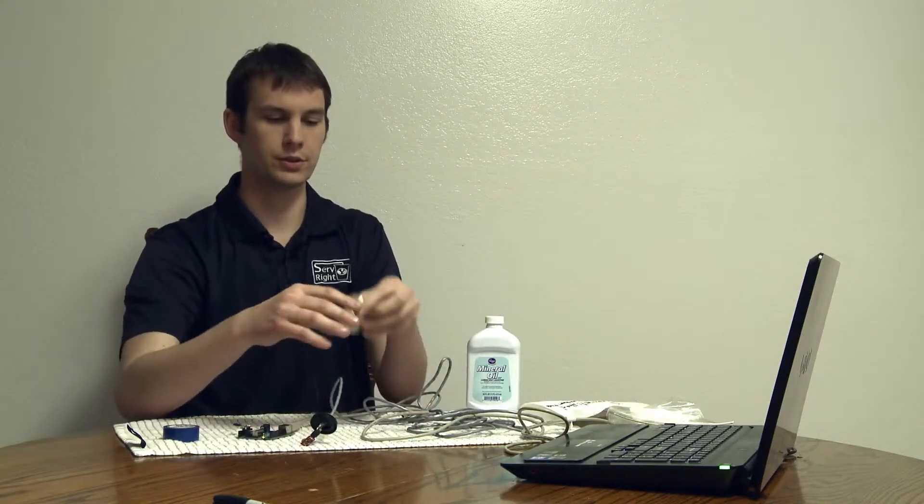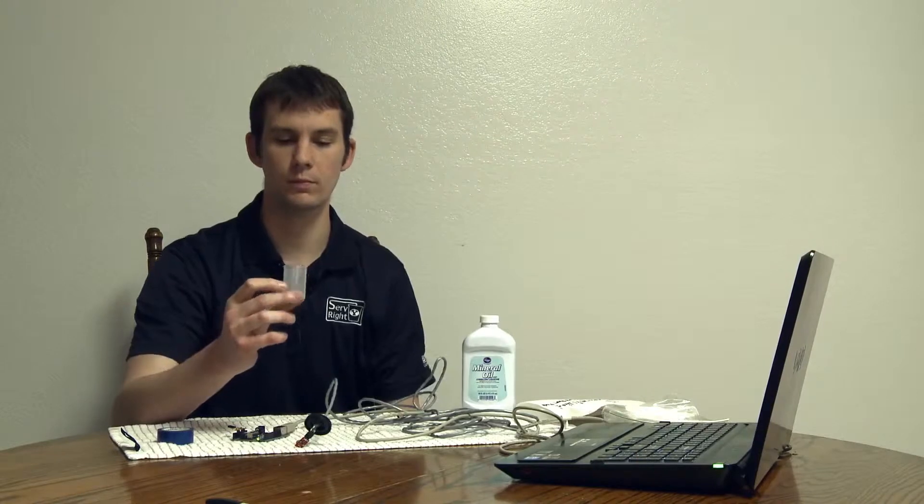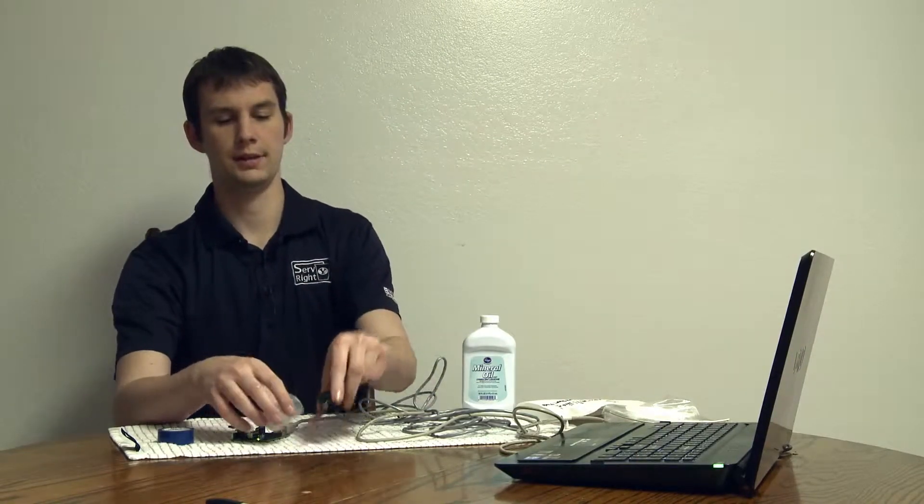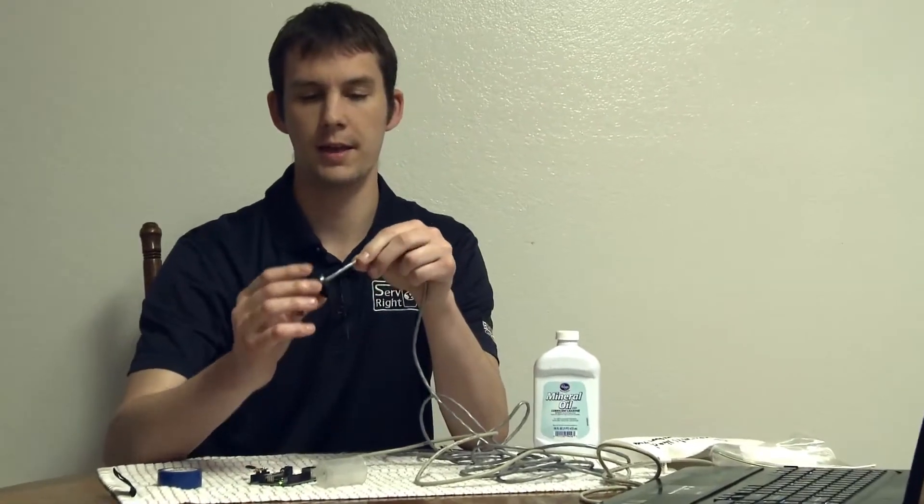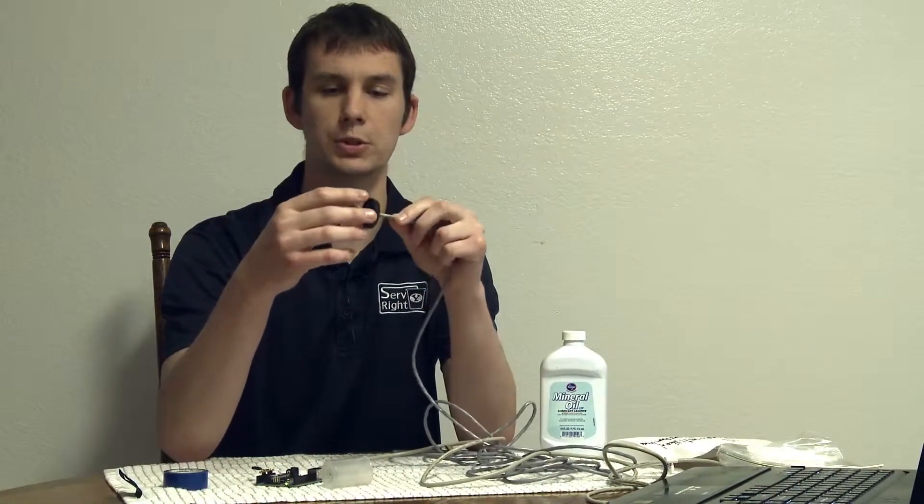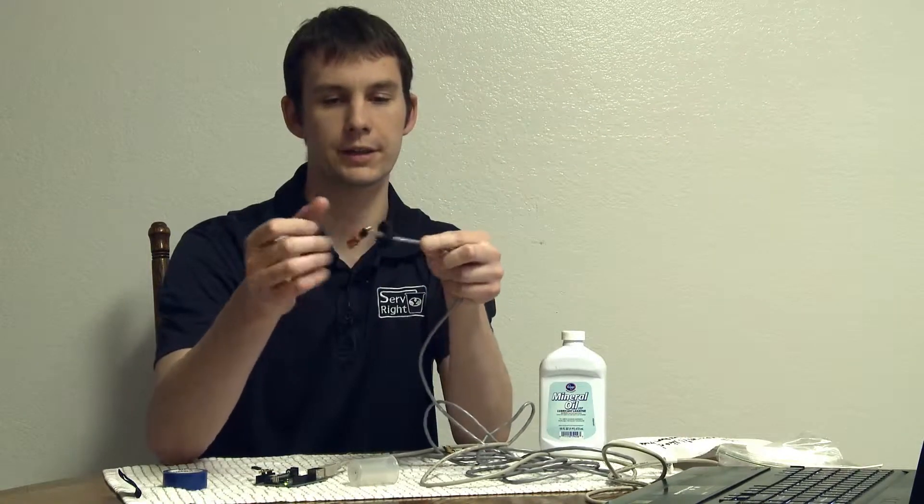So first thing you'll have to do is take your film canister and take the lid and poke a hole in it. You see I've already done that. And feed your cable through it. You don't want to push it too far because it still has to fit inside the film canister. You're going to want to take some sealant and clog up that hole so that water can't get through.